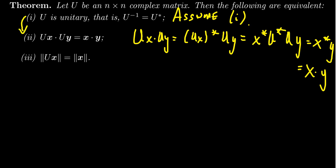So then the next one, let's assume the second statement. So we'll assume that Ux dot Uy equals x dot y for any vectors x and y. And then we need to prove this right here. So we start off with ||Ux||². This is the same thing as Ux dot Ux, which this equals by property two.